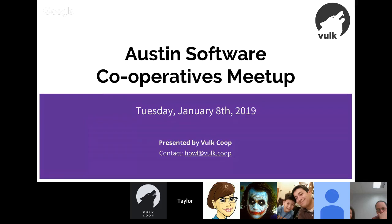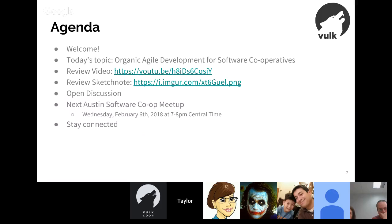Welcome to another episode of the Austin Software Cooperative Meetup. This is our first meetup for 2019. We've been doing this for quite a few years now. If you'd like to check out other videos, go to the meetup or our Google Hangouts account. Today's topic is organic agile development for software cooperatives.